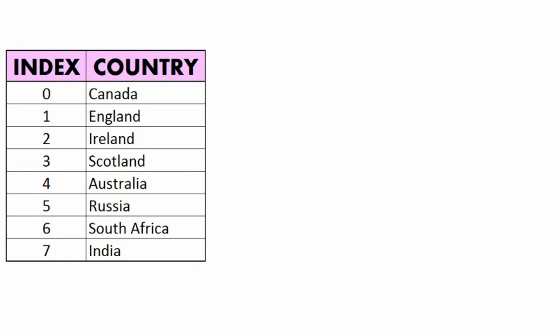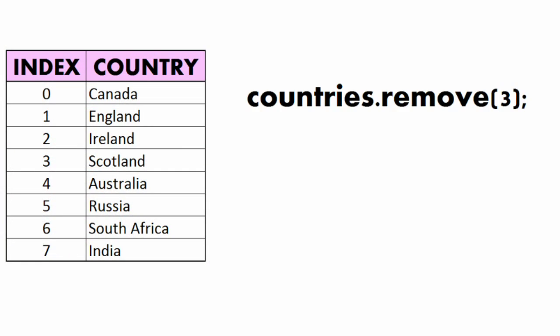We can also remove items from the ArrayList either by typing in the item itself or by typing in the index of the item to remove. To remove Scotland, we can type countries.remove(3) since it is at index three.